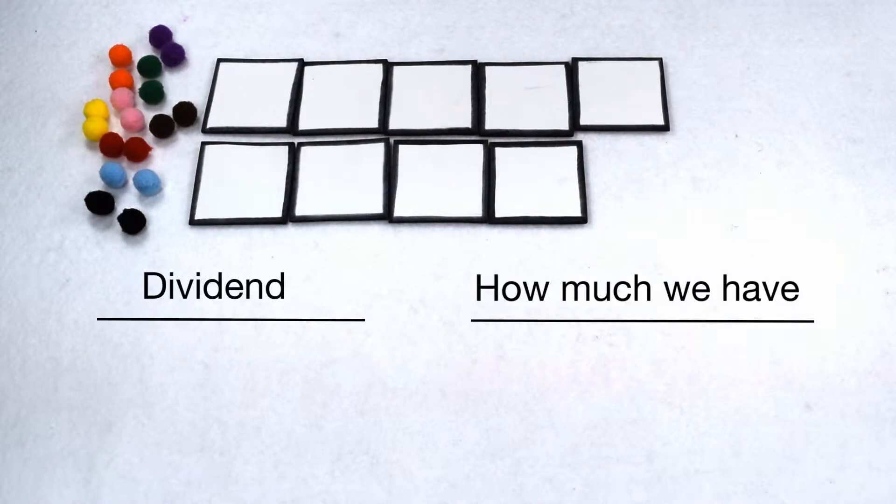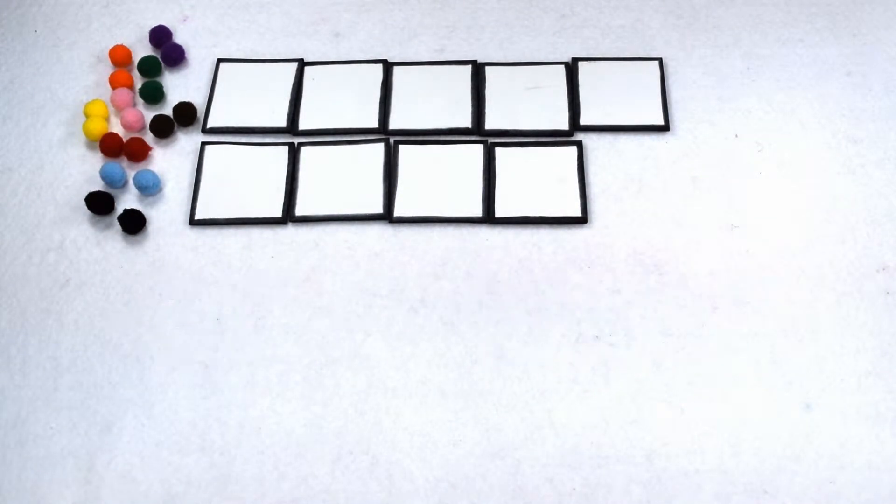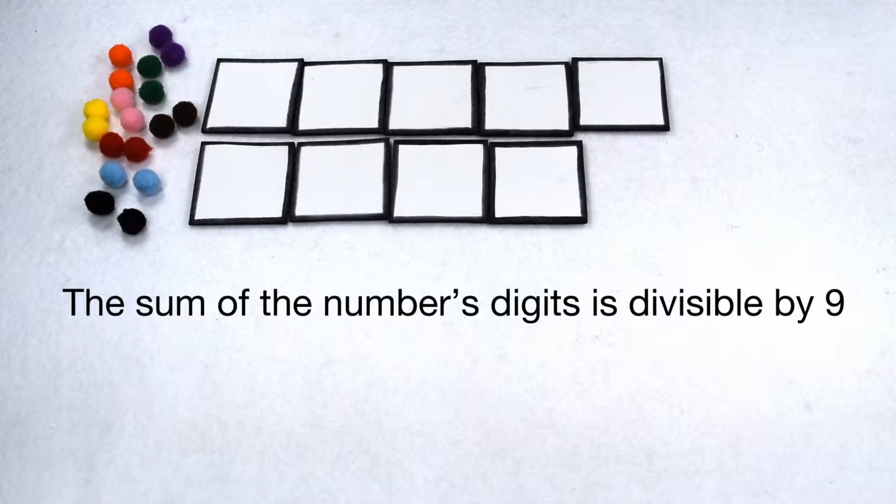In a division problem, the dividend tells us how much we have and the divisor tells us how we're going to group it. How can we determine which numbers can be divided by 9 without any remainders? If a number is divisible by 9, then the sum of its digits is divisible by 9.